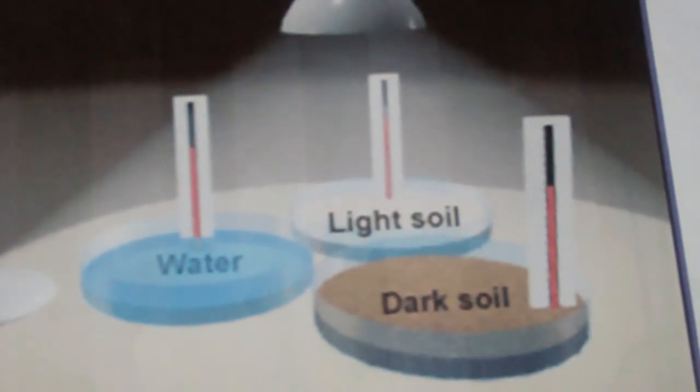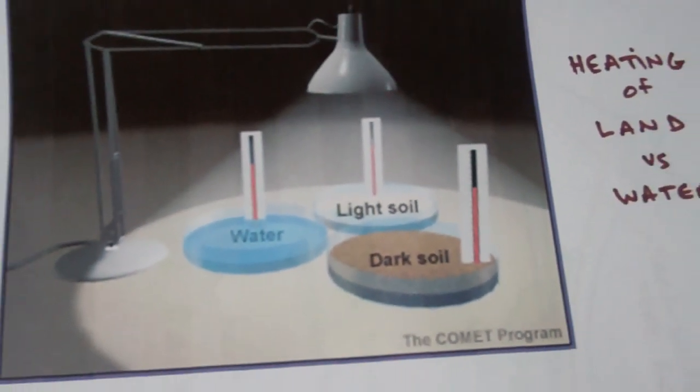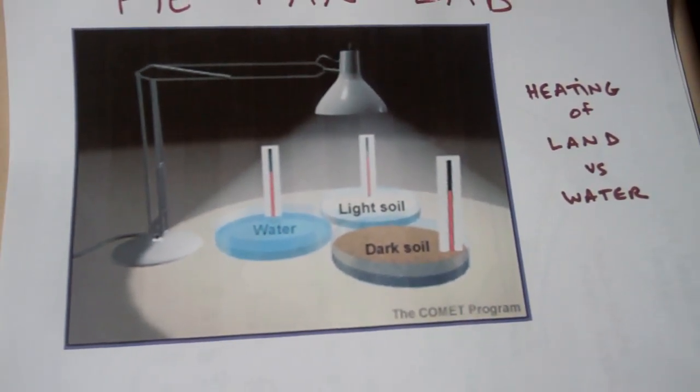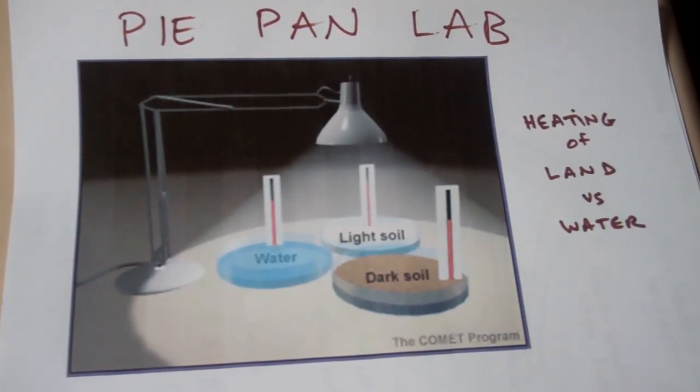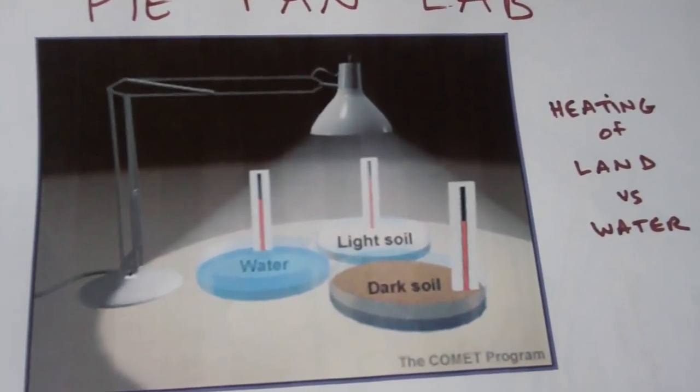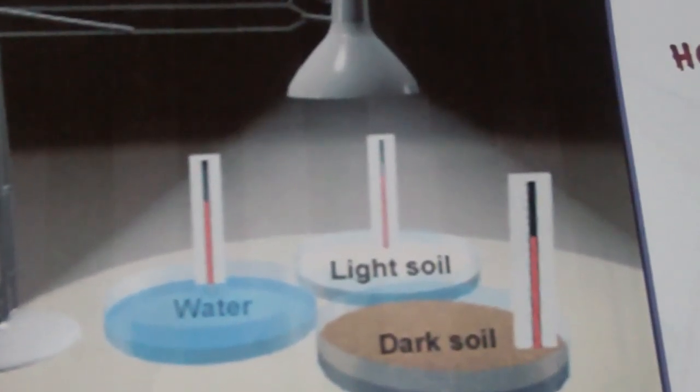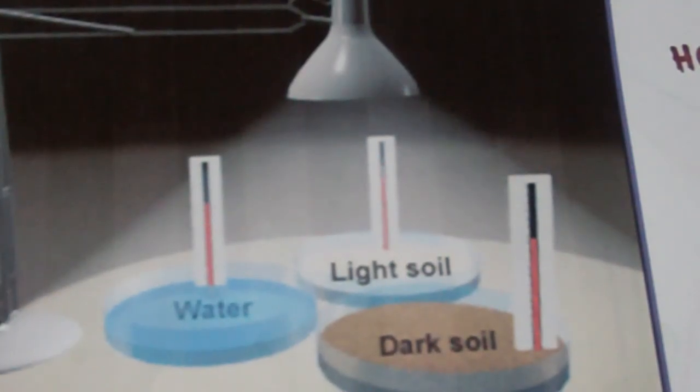This video is going to talk about our PI-PAN lab that we did, the heating of land versus water, where we heated up dark soil, light colored sand, and water. We turned on the light bulb and every minute we took the temperature for 13 minutes. Then we turned the light bulb off and we continued recording the temperature for another seven minutes.